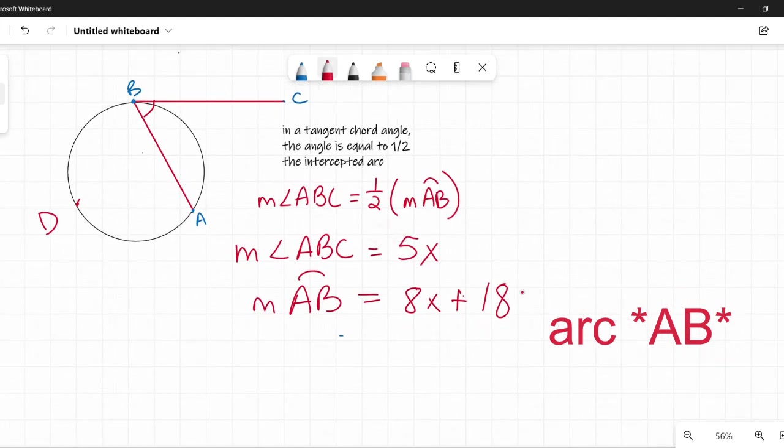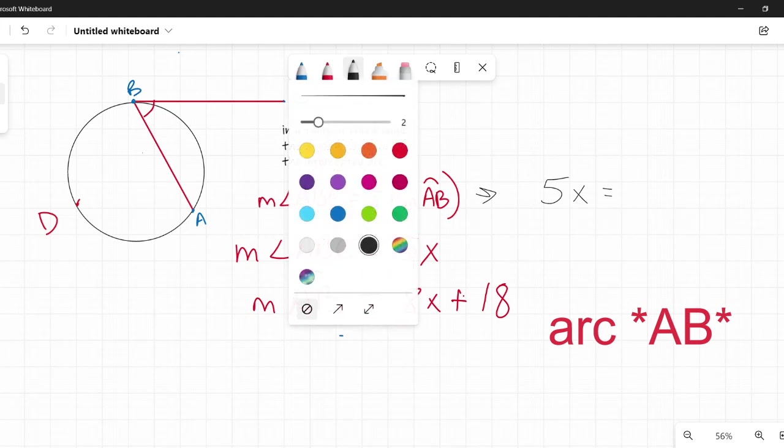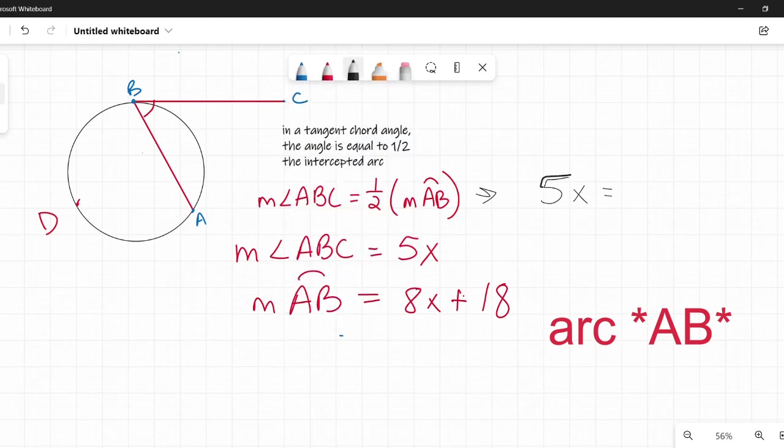So here in this case, we have measure of angle ABC is 5X. I'm going to use this little formula right here, and I'm just going to plug things in. So the measure of angle ABC is 5X. So I'm going to plug that in for the measure of angle ABC. Let's make this a little easier to read. There we go. And on the right hand side, one half times the measure of arc B. And I'm told the measure of arc B is 8X plus 18. So I'm going to write that over here.